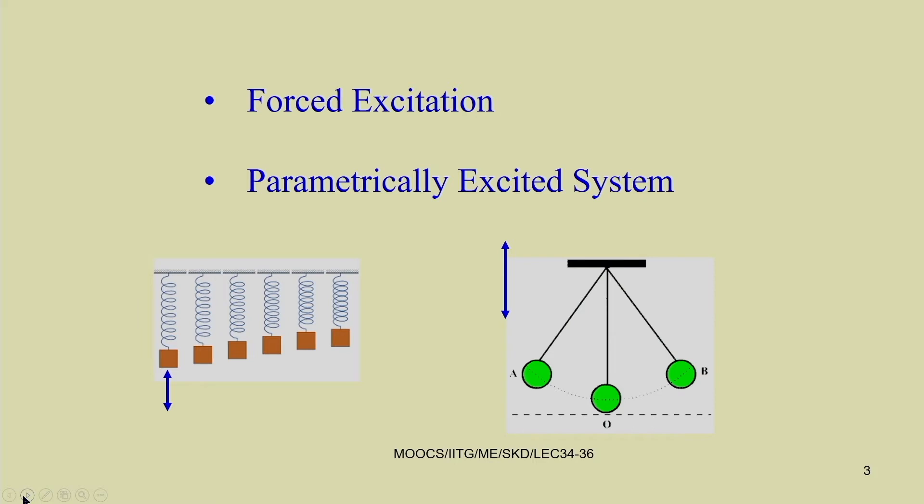In nonlinear forced excitation cases, we have studied weak excitation, hard excitation, and different resonance conditions — including simple resonance, sub-harmonic, and super-harmonic resonance. For parametrically excited systems, we have principal parametric resonance, where resonance occurs when the excitation frequency is nearly twice the natural frequency. For a continuous system with infinite natural frequencies, we can get numerous parametric resonance conditions.